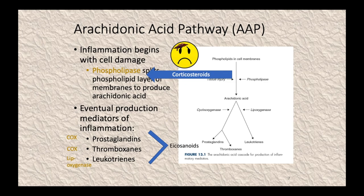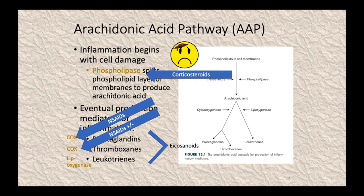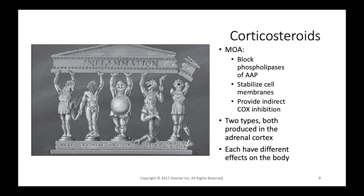Corticosteroids, especially glucocorticoids, act right at the phospholipase step — they prevent phospholipase from splitting the phospholipid layer of the membrane, stopping the entire inflammatory reaction from the start. NSAIDs, by contrast, focus more on COX-1 and COX-2 inhibition further down the pathway. Corticosteroids stabilize cell membranes and provide indirect COX inhibition. There are two types of corticosteroids, both produced in the adrenal cortex — they mimic naturally produced adrenal hormones, each with very different effects on the body.